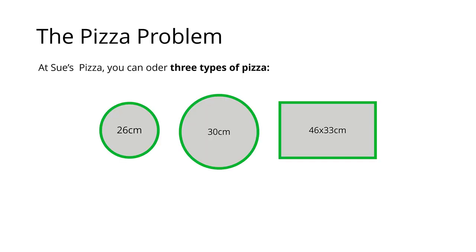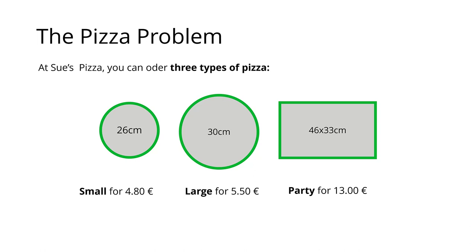Let's imagine that you want to order a pizza at Sue's Pizza Place. At Sue's Pizza, there are three types of pizza — it's a small pizza place with only three types and no choice of toppings. You can get a small pizza, a large pizza, or a party pizza. These pizzas have different sizes: 26 centimeters, 30 centimeters, and 46 by 33 centimeters. Each of these pizzas has a different price point: the small pizza is 4.80, the large pizza is 5.50, and the party pizza is 13 euros.